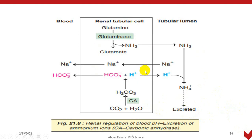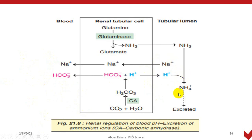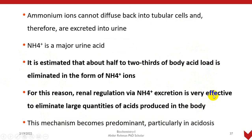Overall, bicarbonate is regenerated in this process. So the renal mechanism can also be described as a system in which bicarbonate is recycled under normal circumstances, while excess hydrogen ions present in the blood are eliminated through urine as ammonium ions. The ammonium ion system is the most predominant mechanism in renal regulation.